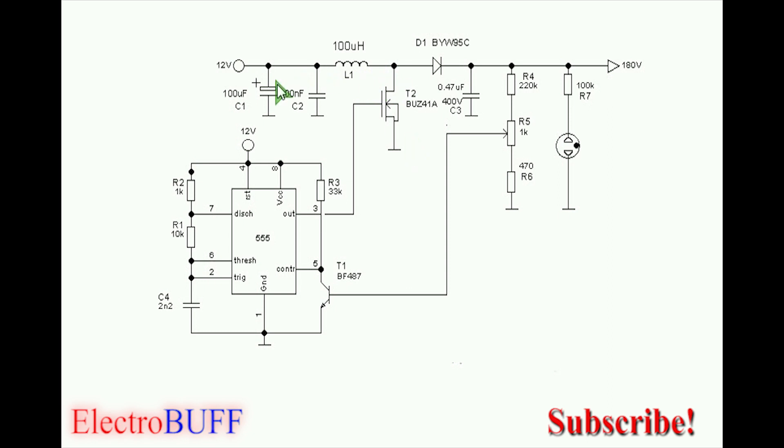In the upper section you have the boost converter circuit. Here you have your input voltage stabilization capacitors and then a 100 nanofarad noise filtering capacitor, then you have a 100 microhenry inductor and a power MOSFET.